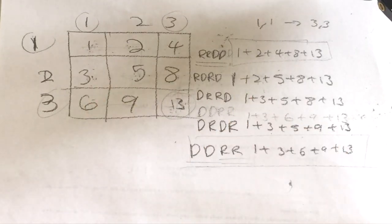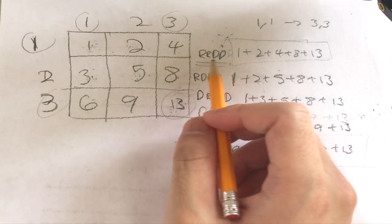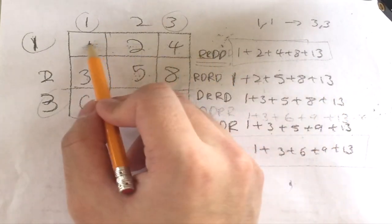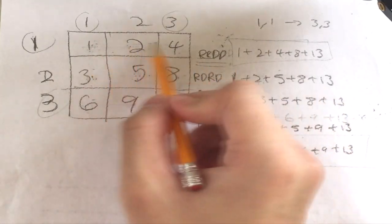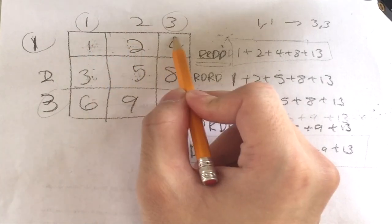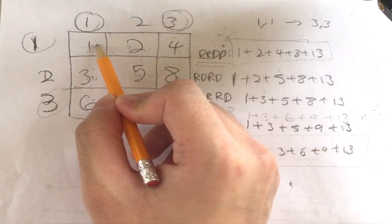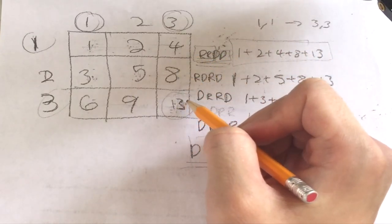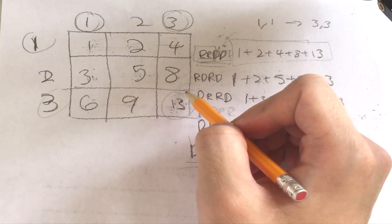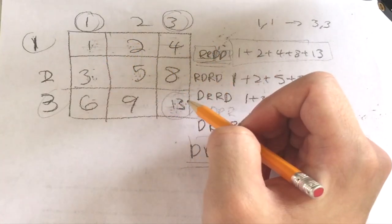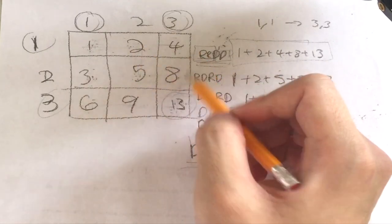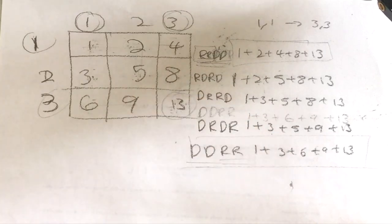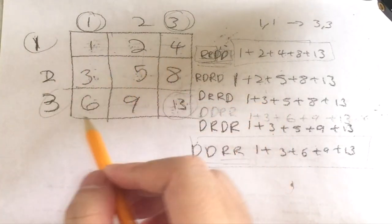Now let's think about how many different sums there are. The number of rights we take is the difference between the columns: going from (1,1) to (3,3), we go right twice, which is 3 minus 1. Similarly, we go down twice, also 3 minus 1. So the number of rights equals (y2 - y1) and the number of downs equals (x2 - x1).